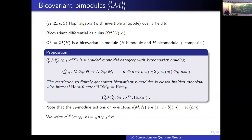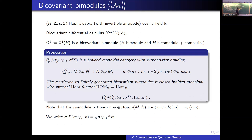Furthermore, considering the Hom of two bicoinvariant bimodules — that is, right H-linear maps — this is again a bicoinvariant bimodule. This tells us there is an internal Hom functor in this category. Note that everything in this category is symmetric with respect to left and right. Here I'm taking right linear maps, and the left and right module structure is done only with the left actions of M and N, so the symmetry is preserved.